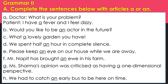Grammar 2. A. Complete the sentences below with articles a or an. A. Doctor: What is your problem? Patient: I have a fever and I feel dizzy. B. Would you like to be an actor in the future? C. What a lovely garden you have. D. We spent half an hour in complete silence. E. Please keep an eye on our house while we are away. F. Mr. Knappett has brought a new one in his farm. G. Ms. Sharma's opinion was criticized as having a one-dimensional perspective. H. We had to catch an early bus to be here on time.